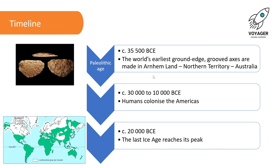Around 35,500 BCE, the world's earliest ground-edge grooved axes were made in Arnhem Land in the Northern Territory of Australia, and here are some samples in a museum. Between 30,000 and 10,000 BCE, humans began to colonise the Americas, travelling from Europe probably via Greenland and Iceland to North America and then down to South America.